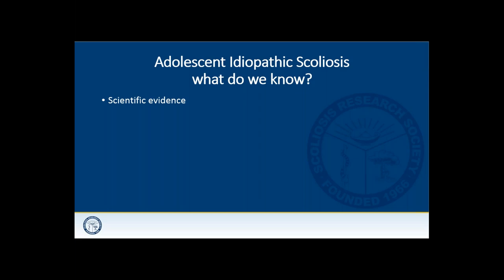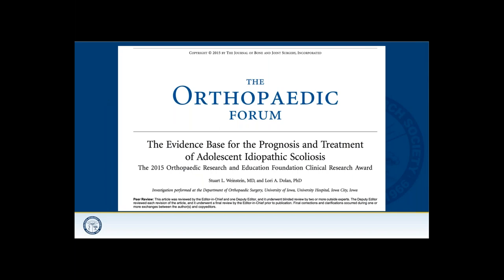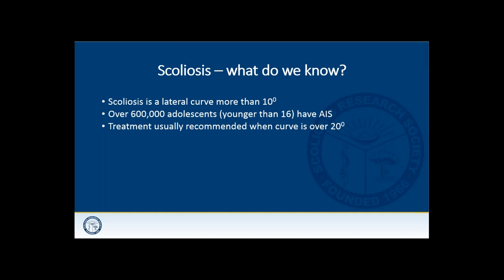What do we know about the natural history of adolescent idiopathic scoliosis? The scientific evidence comes from studies like those in the Journal of Bone and Joint Surgery — a long-term study looking at prognosis and treatment of AIS. To summarize: scoliosis is a lateral curve of more than 10 degrees, affecting over 500,000 adolescents. You may not be alone with this diagnosis, and treatment is usually recommended for curves over 20 degrees — which is why those numbers are so important.